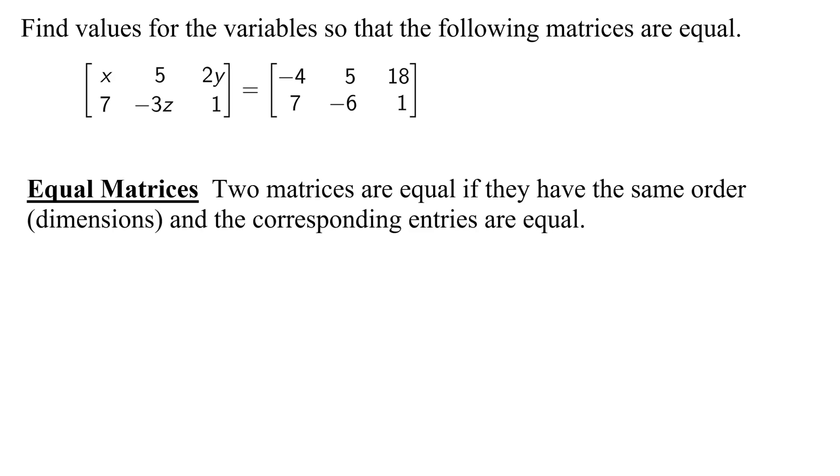What do we mean by equal matrices? Two matrices are equal if they have the same order, or another word for order is dimensions, and the corresponding entries are equal.